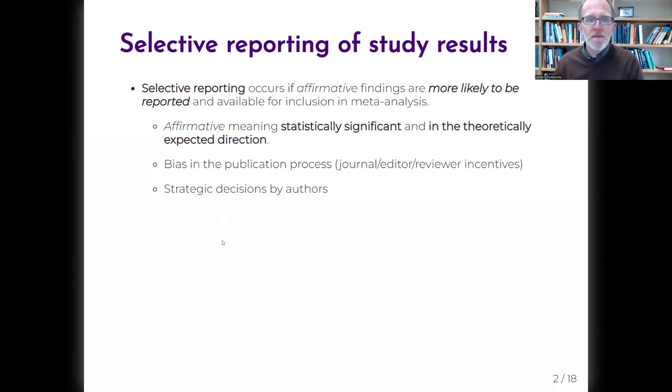By selective reporting, we mean the phenomenon where statistically significant affirmative results are more likely to be reported and therefore more likely to be available for meta-analysis compared to results that aren't statistically significant or aren't consistent with theoretical expectations. So this happens as a result of biases in the publication process on the part of journals, editors, and reviewers, as well as because of strategic decisions on the part of authors.